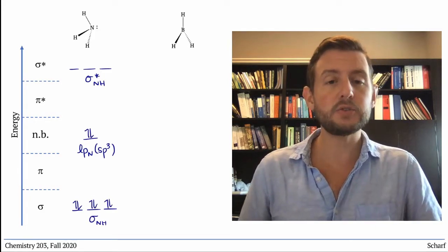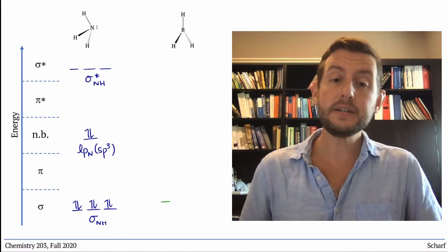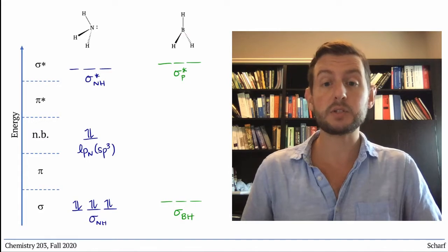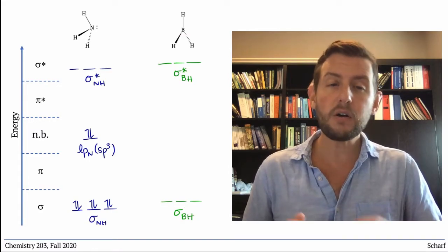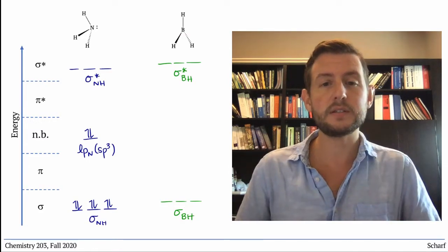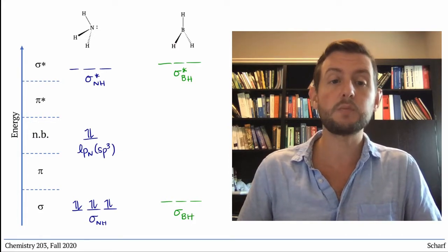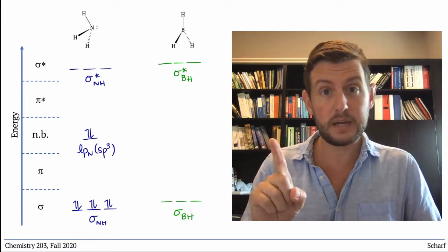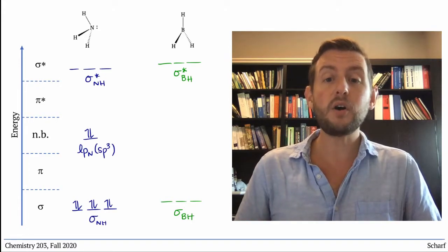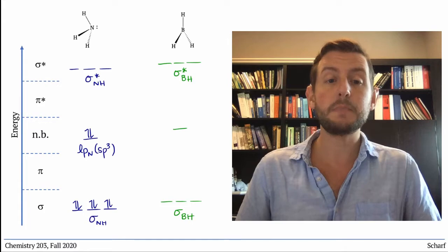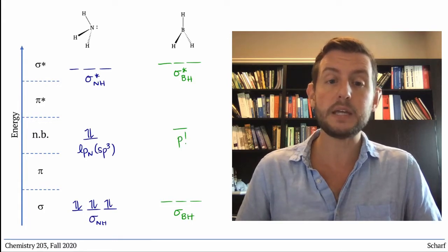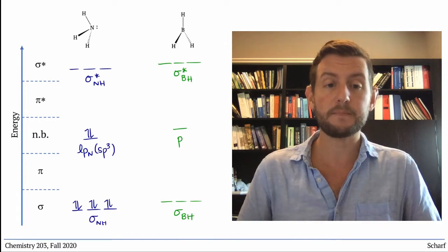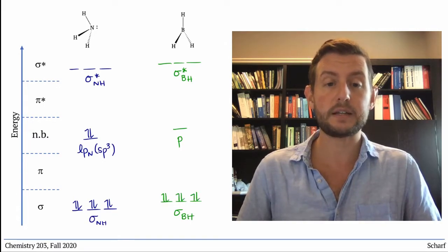Borane is a little bit trickier. It has three BH sigma bonds and three corresponding sigma star orbitals. They're all a bit higher than ammonia's sigma and sigma star orbitals, because nitrogen is more electronegative than boron. But we're not finished with BH3. Boron also has an unhybridized P orbital that happens to be empty, so it resides in the non-bonding region of the MO diagram. Borane has six valence electrons.